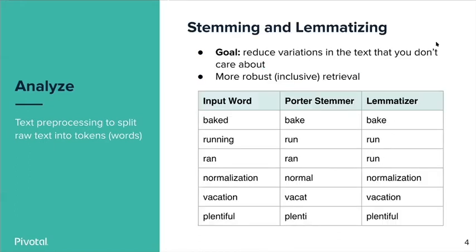Stemming and lemmatizing are all about reducing the variation that you don't think you're going to care about and focusing on things that do matter. The goal is to make your result set more inclusive and robust. For example, let's say you're interested in 'running' and you write your query for 'running,' but there are other forms of that word, including just 'run' or 'ran' — the past tense and so forth — and you want to be able to capture all of those.